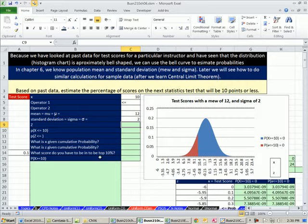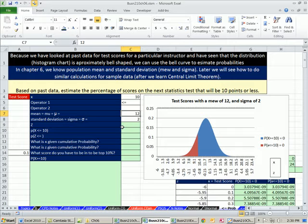We're going to continue with our same example of test scores for a particular instructor, where the test has a mean of 12, a standard deviation of 2. And we want to ask the question, based on past data, estimate the percentage of scores on the next statistics test that will be 10 points or less.